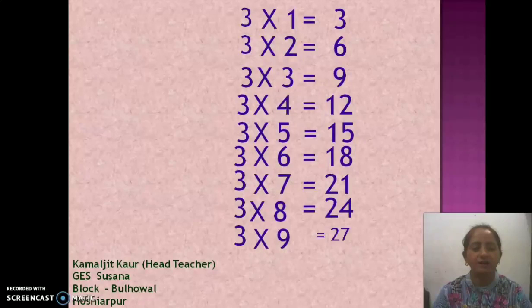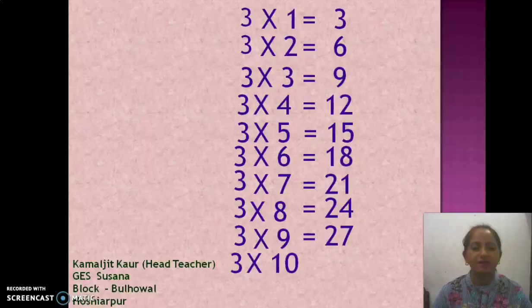Three times nine is twenty-seven. Three times ten is thirty.